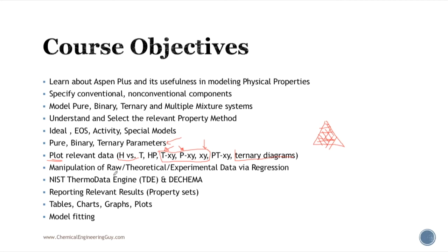We are going to be manipulating a lot of data — our own experimental raw data, theoretical model values, or experimental data from other sources. We will check out relevant databases. We will mostly use the one already included in Aspen Plus via the NIST or TDE engine. DECHEMA is not included because you need to pay for each dataset, so we will not be using that as much.